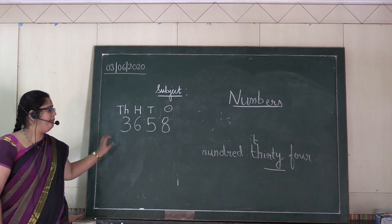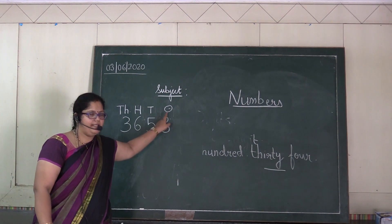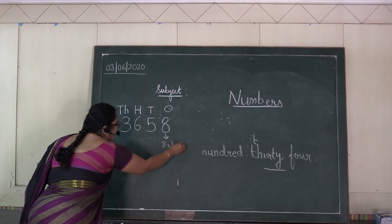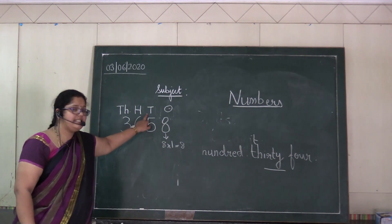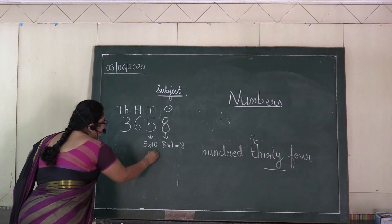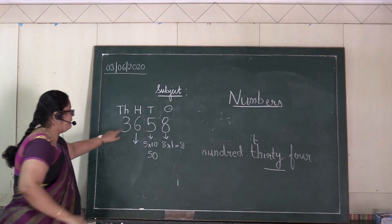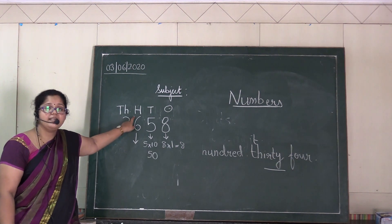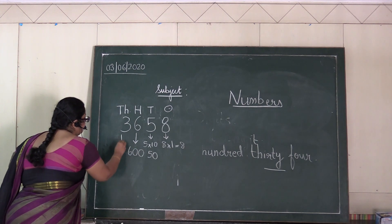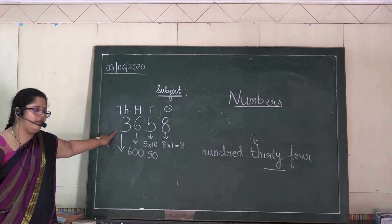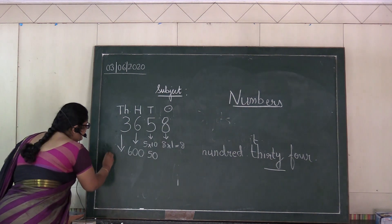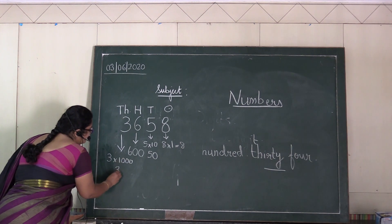What is place value then? Eight is in one's place, so place value of eight will be eight times one — eight. Five is in ten's place, so place value of five will be five times ten — fifty. What will be the place value of six? Six is in hundreds place, so six times hundred — six hundred. What will be the place value of three? Three is in thousandths place, so it will be three times thousand — three thousand.